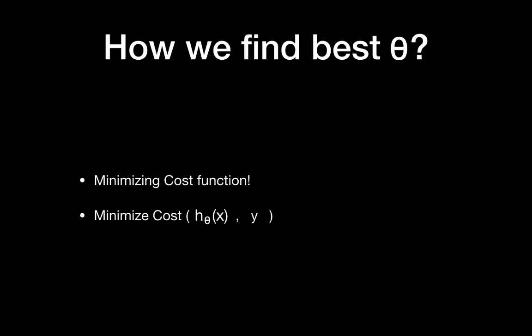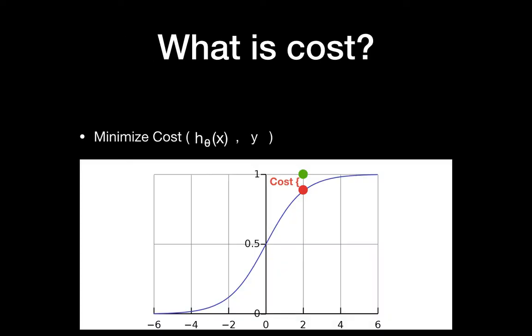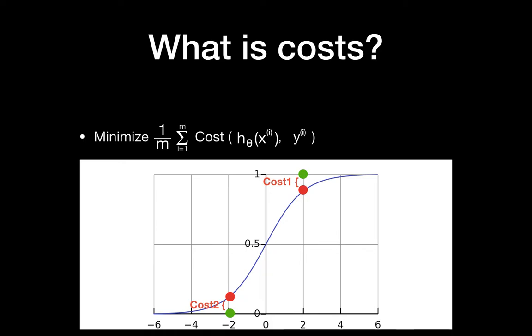So how do we find the best θ? We have the sigmoid function and for binary classification we use it to get a range of 0 to 1, but we need to optimize θ so that the hypothesis closely matches the real data set distribution. Minimizing the cost function is the way to find the best θ. The cost is the difference between the hypothesis and the real value — sometimes called the error rate. For multiple data points, we sum and divide by the total count.